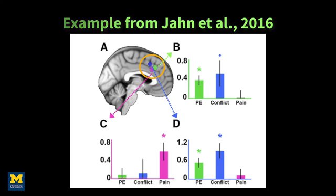Other methods are also becoming popular for outlining the functional architecture of the brain. For example, transcranial magnetic stimulation (TMS) temporarily disrupts neural activity in what can be thought of as a virtual, temporary, reversible lesion, which allows us to make claims about what part of the cortex is responsible for certain types of perception and cognitive processes.